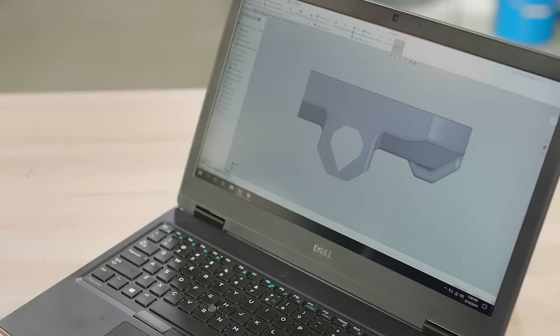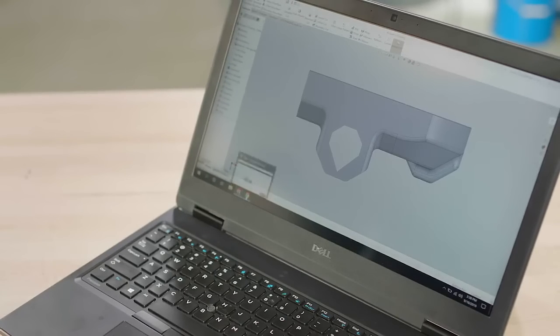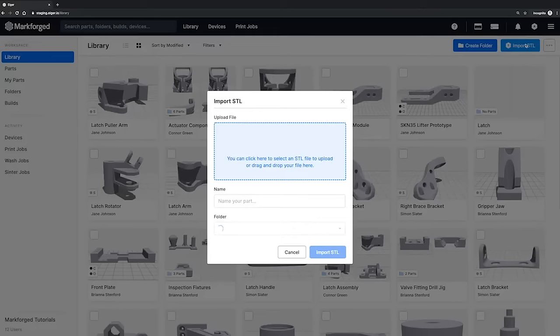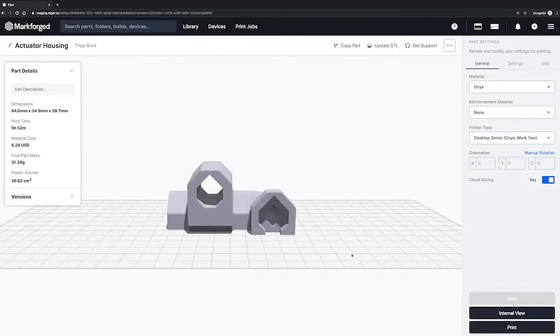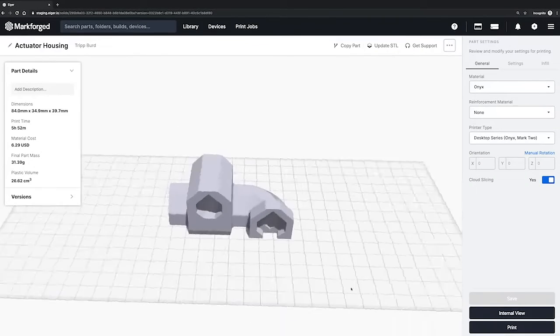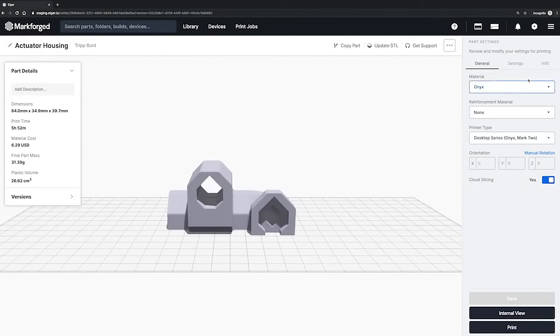First, let's start with CAD. You design your part, then export to STL and upload into Eiger. Eiger is a cloud-based slicing and print management system that comes with every Markforged product. This automatically configures your part based on the material and printer you've selected.